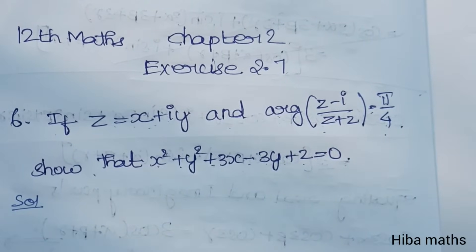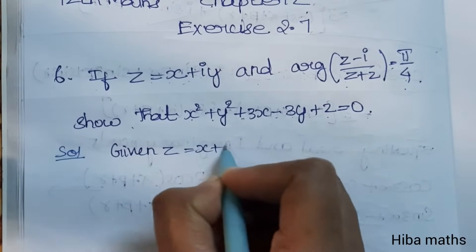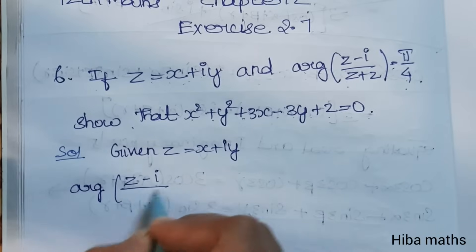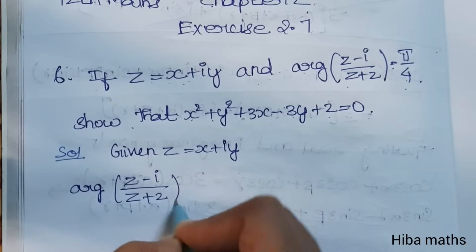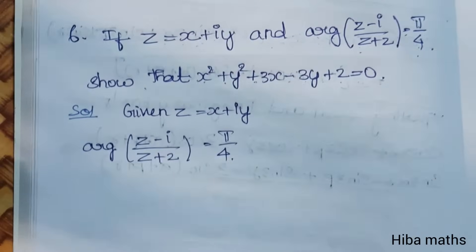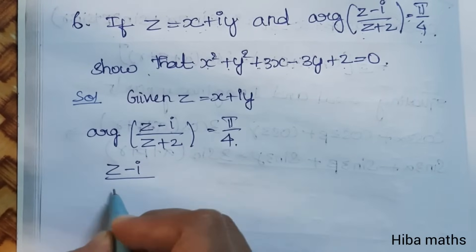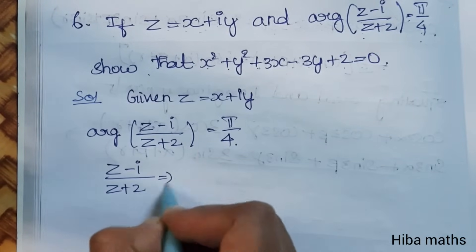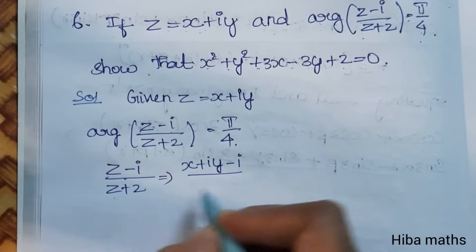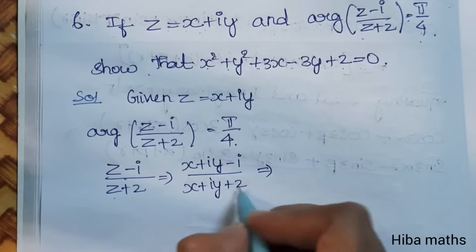Given z is equal to x plus iy, this is the argument of (z minus i) divided by (z plus 2) is equal to pi by 4. So first we will solve it — this is the argument of (z minus i) divided by (z plus 2), separating the real number term and imaginary term.